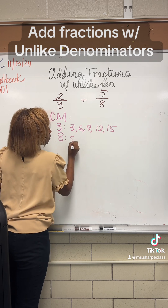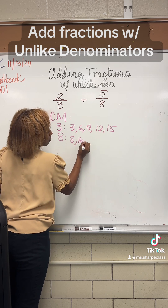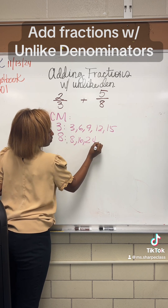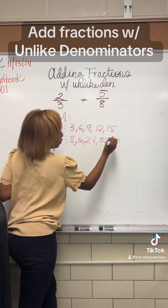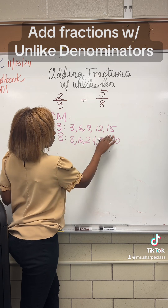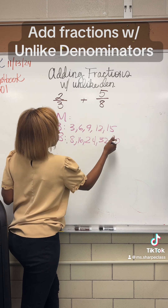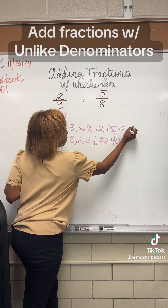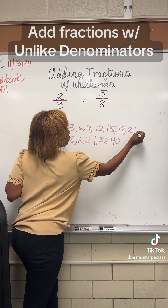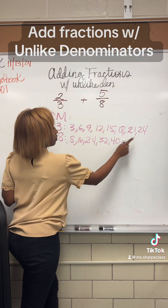The lowest common multiple will allow us to create equivalent fractions, so we may actually have the same whole or denominator. As we're working, we will see that we come up with the denominator of 24.